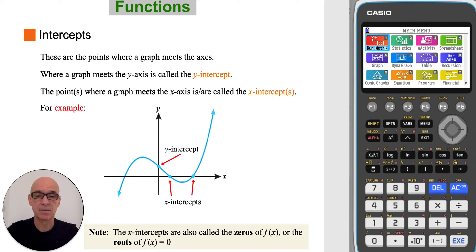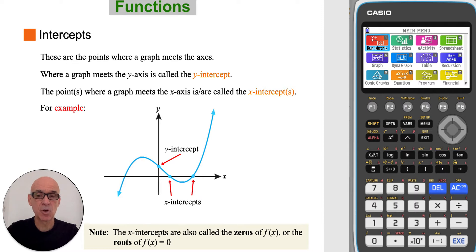The intercepts are the points where a graph meets the axis. Where a graph meets the y-axis is called the y-intercept, and the point or points where a graph meets the x-axis are called the x-intercepts, as shown in the diagram.